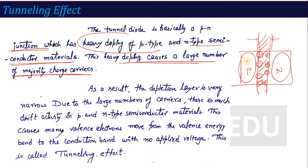This effect is basically called the tunneling effect. The depletion layer is narrowed, and because of this, the valence electrons can move from the valence band to the conduction band with no applied voltage.